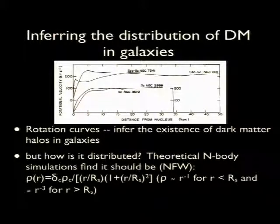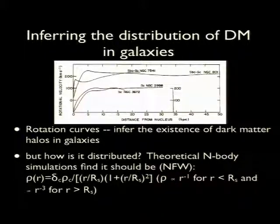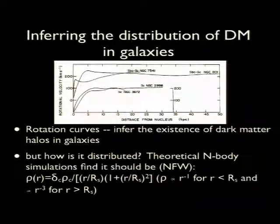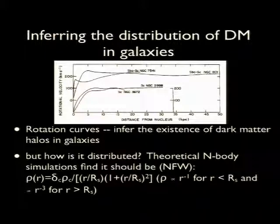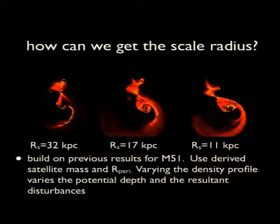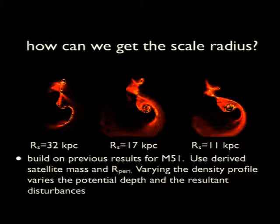We've known since the 1970s from rotation curve observations that dark matter halos exist around galaxies, but there are very few probes that let us get a handle on how it's distributed. Theoretical N-body simulations give us some expectations but don't really give us a means of asking how dark matter is distributed in a specific spiral galaxy. So I'll start with an NFW profile for the halo, where the density goes as r to the minus 1 for radii less than the scale radius and as r to the minus 3 for radii greater than the scale radius. The question I'm trying to answer is: how can we develop an observationally motivated probe for the scale radius of the dark matter halo?